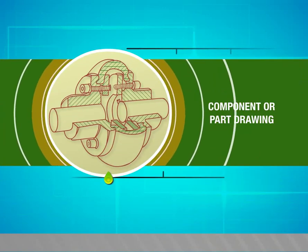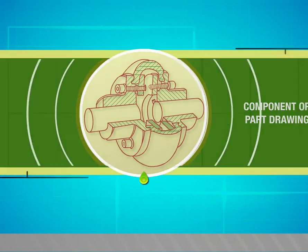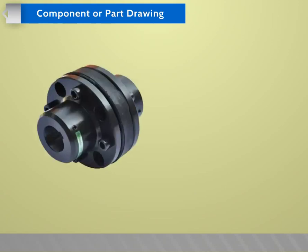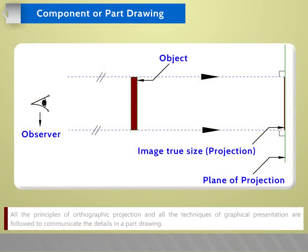In this video we are going to see about part drawing. Component or part drawing is a production drawing or detail drawing of a component to facilitate its manufacture. All the principles of orthographic projection and all the techniques of graphical presentation are followed to communicate the details in a part drawing.